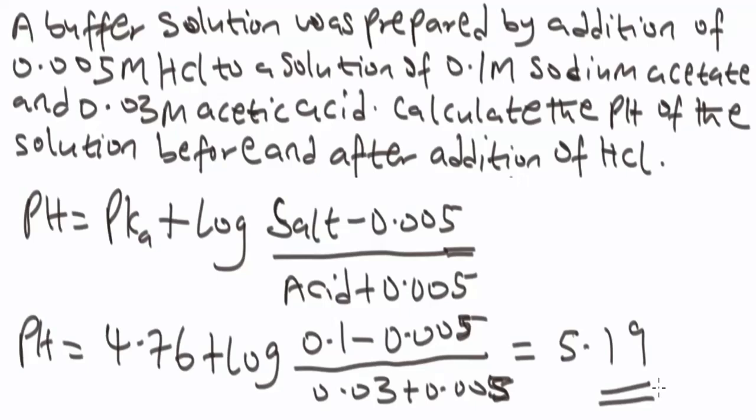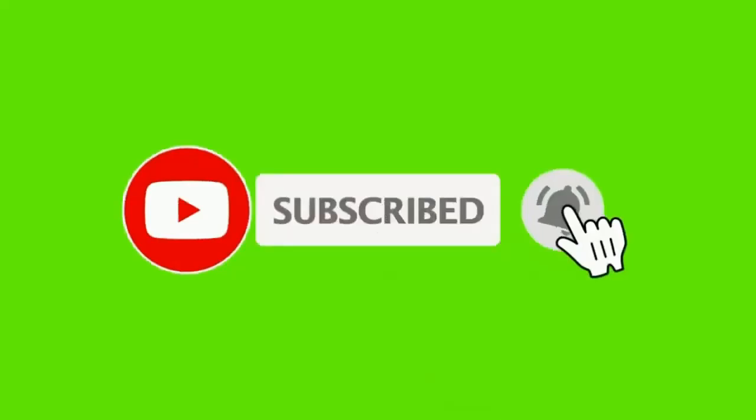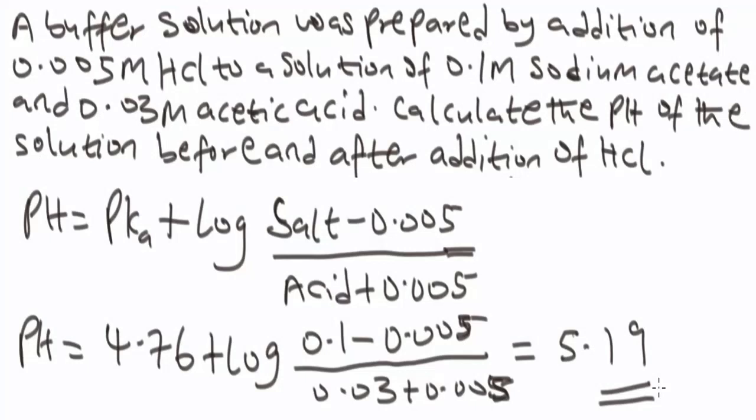This is basically how you can solve problems involving the pH and pOH of a buffer solution using the Henderson-Hasselbalch equation, and with this we have come to the end of the class. If you are new to the channel, be sure to subscribe for more videos like this. Do also like, share and comment on this video. Feel free to ask any specific questions in the comment section below, and I will be sure to give you a response. Thanks for watching.